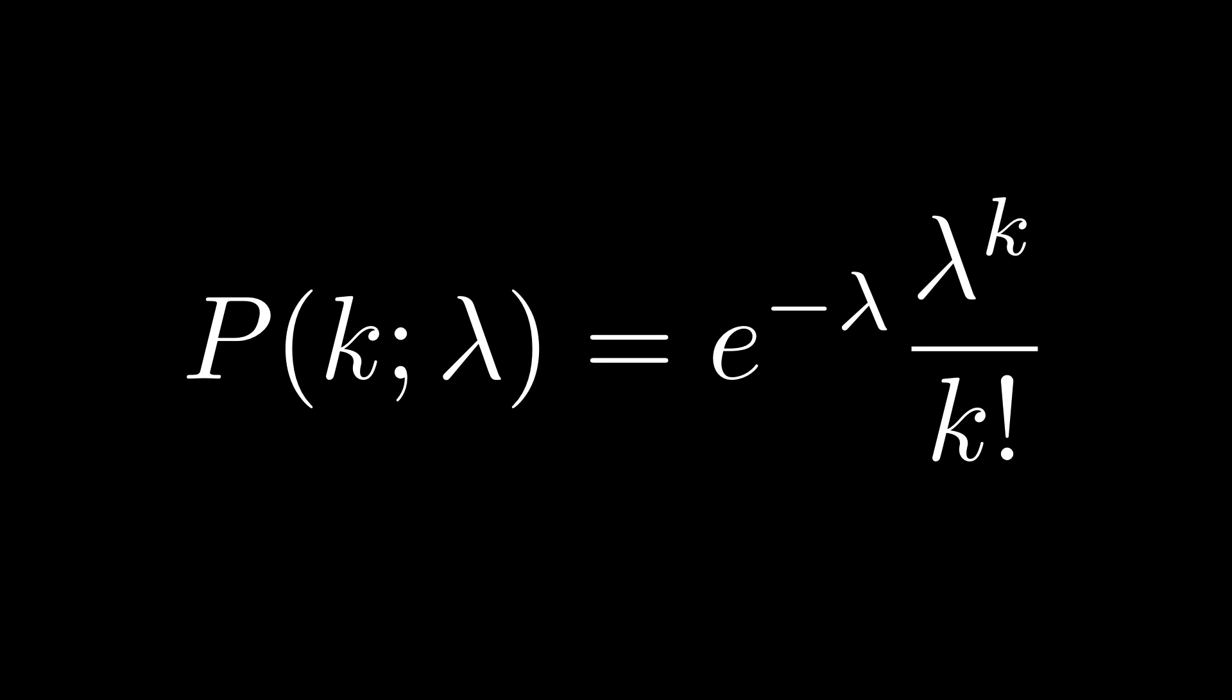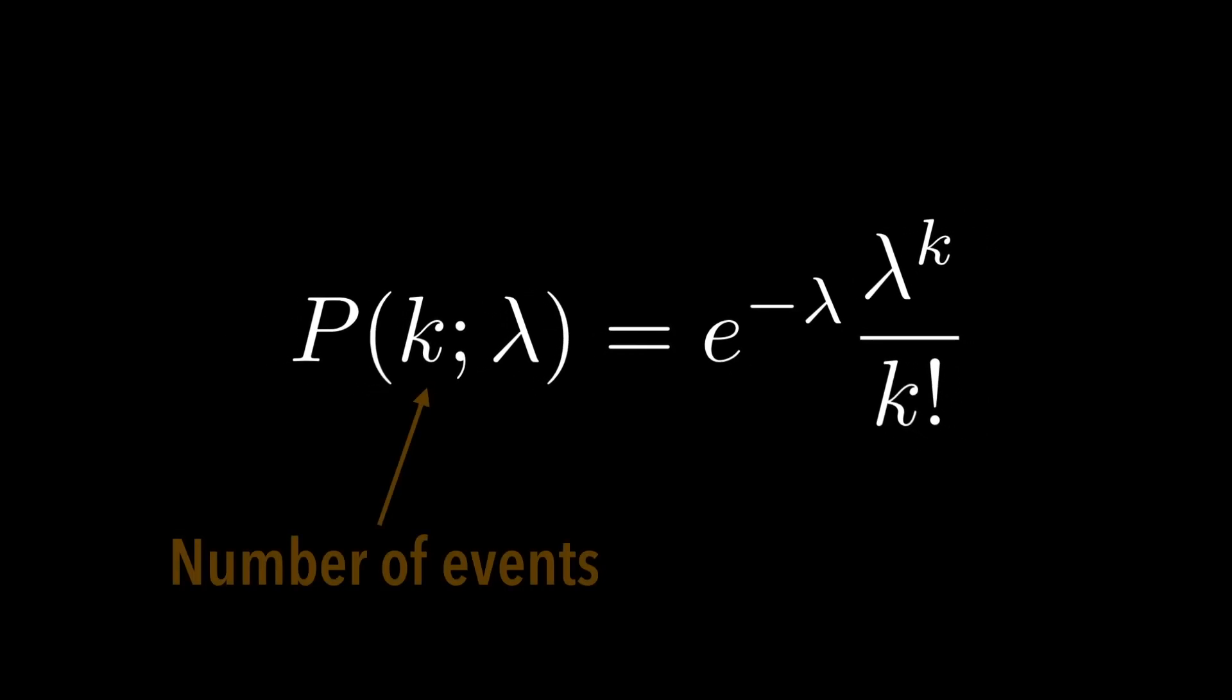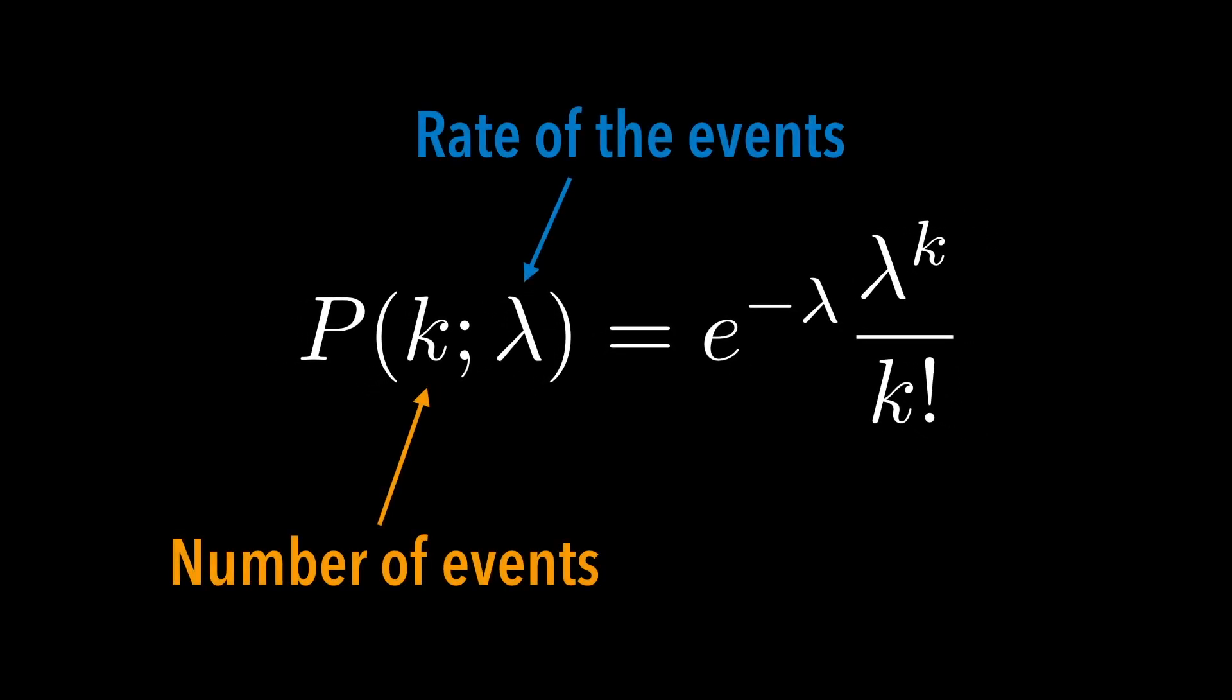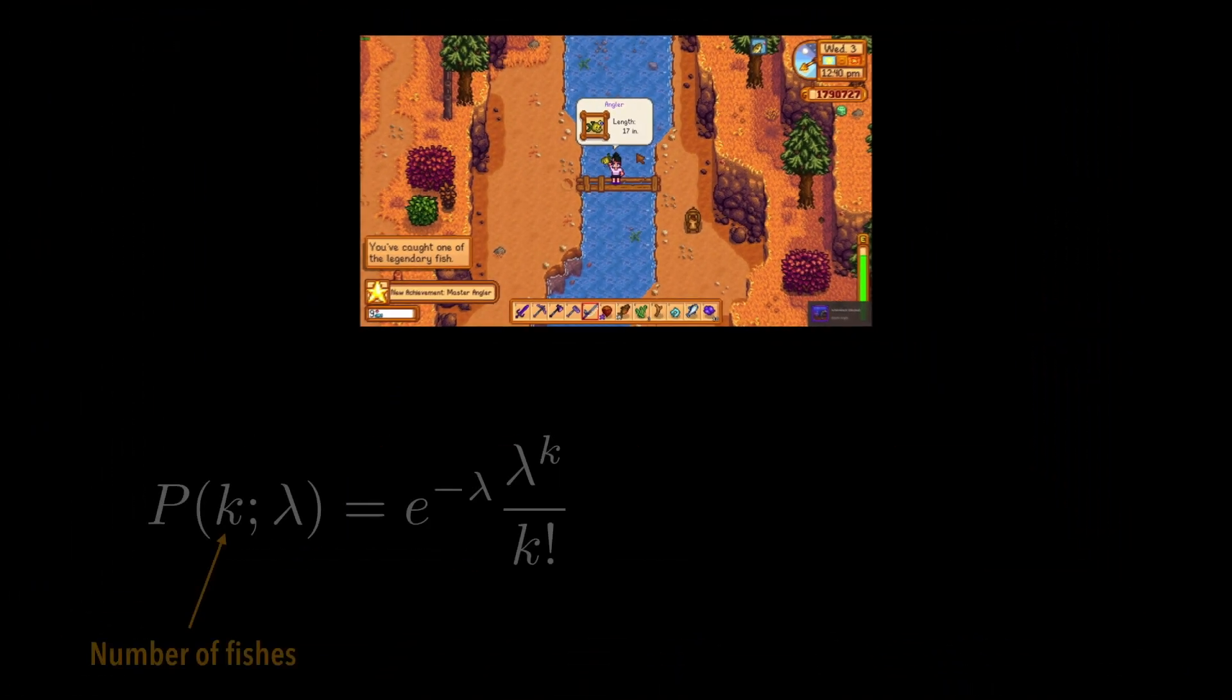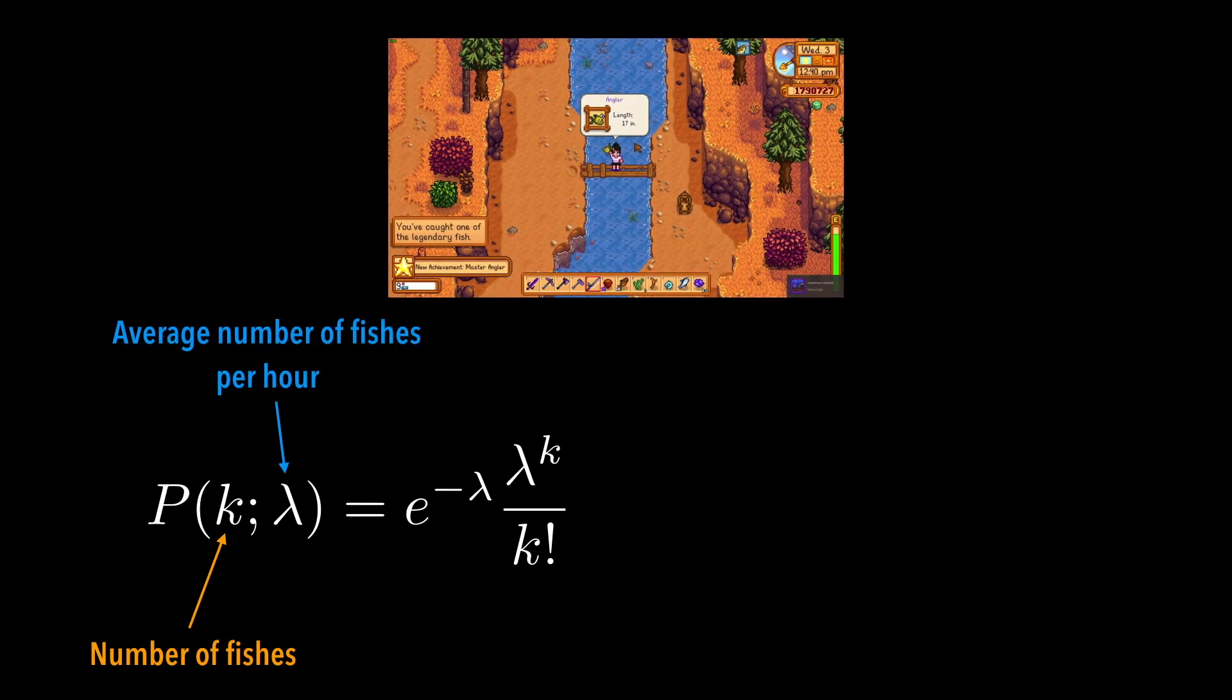Do you know the Poisson distribution? It is the distribution that describes the number of events in a fixed interval when the rate of the event is constant. For instance, if you are fishing on a lake, then the number of fishes you catch may follow a Poisson distribution.